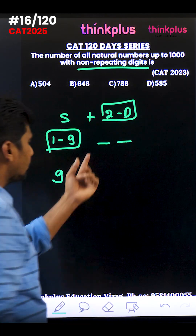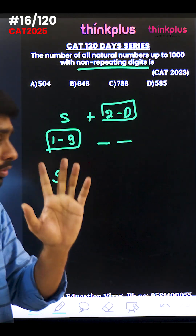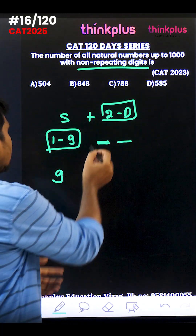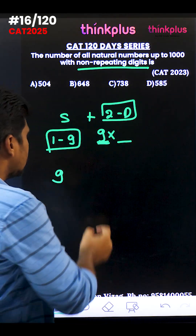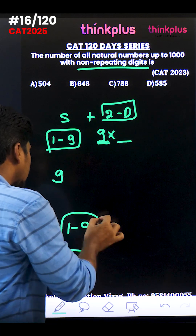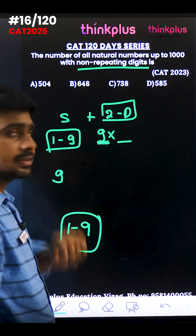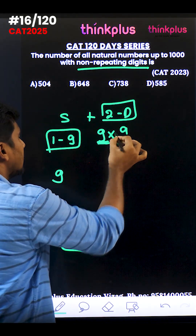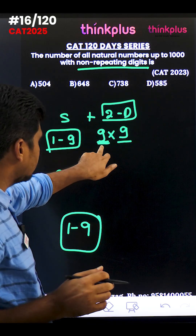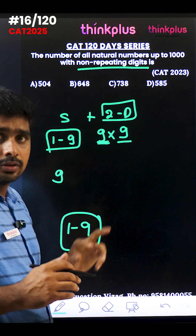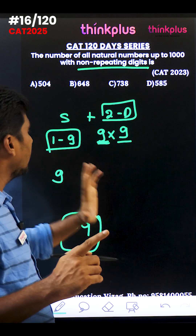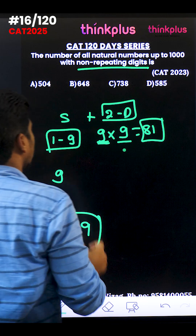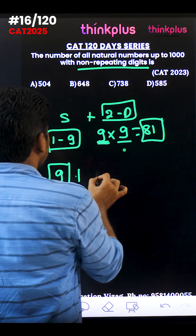For two digit numbers, I need to fill two spaces where repetition of digits is not allowed. The first digit can be filled with anything from 1 to 9 — zero can't be placed first — so 9 ways. For the second digit, from the 10 digits (0-9), one has been used, leaving 9 remaining choices. So two digit numbers = 9 × 9 = 81.